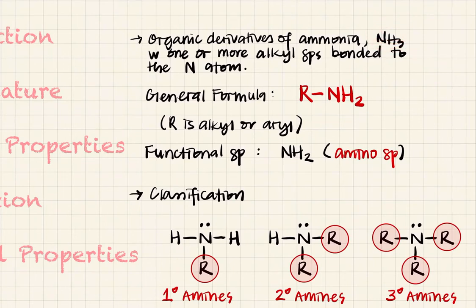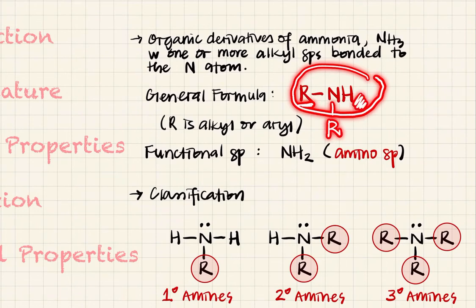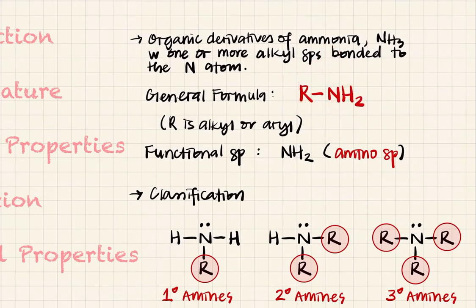Amines are formed when you substitute one or more alkyl groups bonded to a nitrogen atom. So instead of hydrogen you have an R group. It can be 1 R group, it can be 2 — then there's only 1 H left. If 3, there's no H at all. Nitrogen can have 3 bonds.